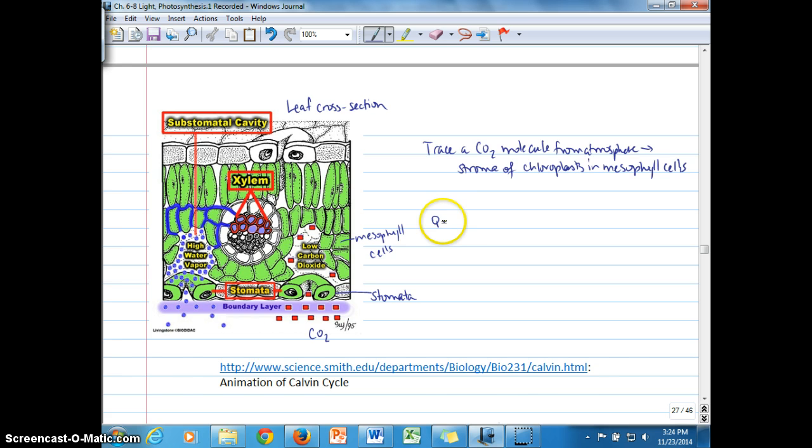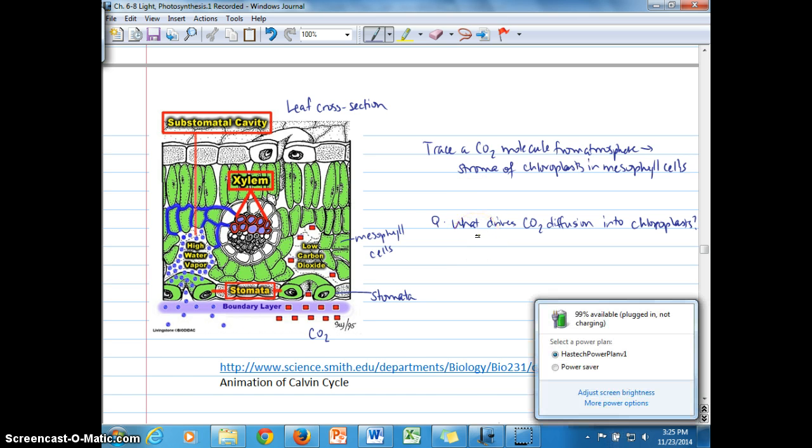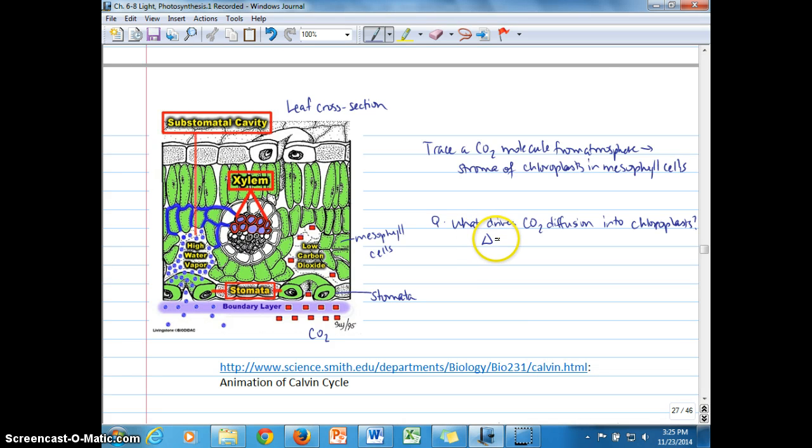The question we want to make sure we understand is what drives CO2 diffusion into the chloroplasts from the atmosphere. If you go back to Chapter 1, when we talked about Fick's first law, it is a concentration gradient of CO2 from the external atmosphere to the interior of the chloroplasts, to the stroma, or we could also refer to that as a chemical potential gradient, because a concentration gradient reflects a chemical potential gradient.